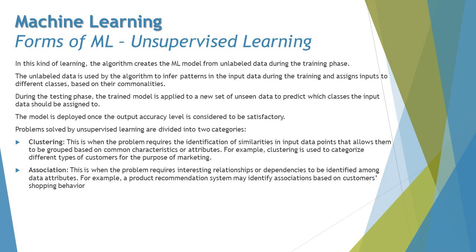The second form of ML is unsupervised learning. There's a key difference from supervised learning: we use data but we don't use labels. In unsupervised learning, the algorithm creates the ML model from unlabeled data during the training phase. The unlabeled data is used by the algorithm to infer patterns in the input data and assign inputs to different classes based on their commonalities.